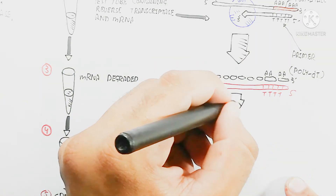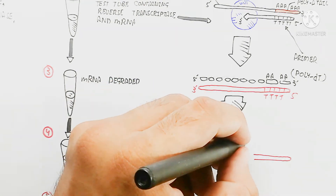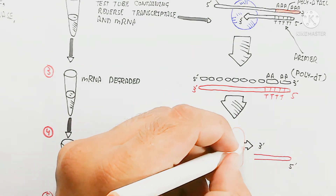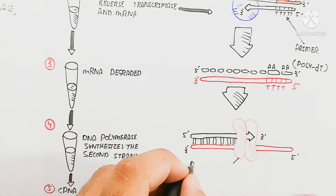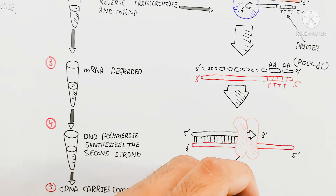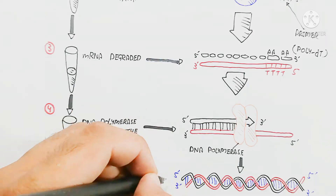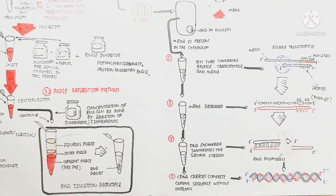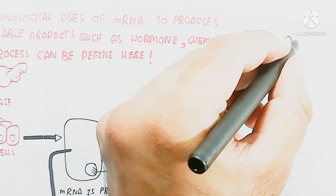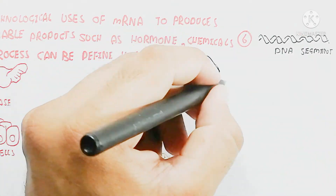The messenger RNA is degraded, leaving the complementary DNA strand behind while DNA polymerase adds to it. The recently synthesized strand then serves as a template, and DNA polymerase produces a complete double helix DNA. This DNA segment is the gene-containing segment which can produce insulin — the same gene present in our nucleus that produces insulin through transcription and translation.